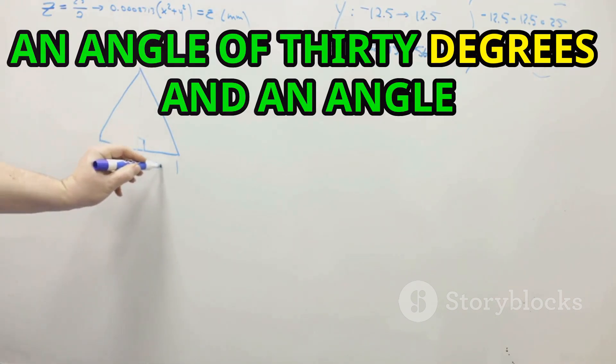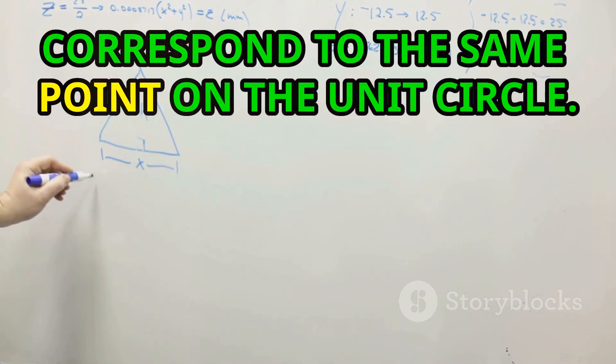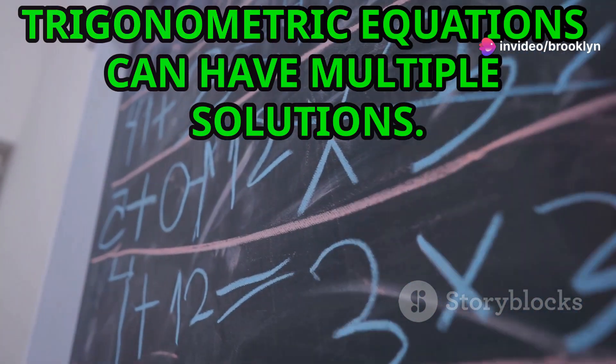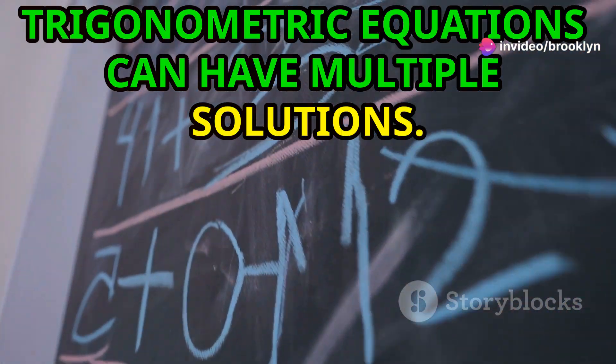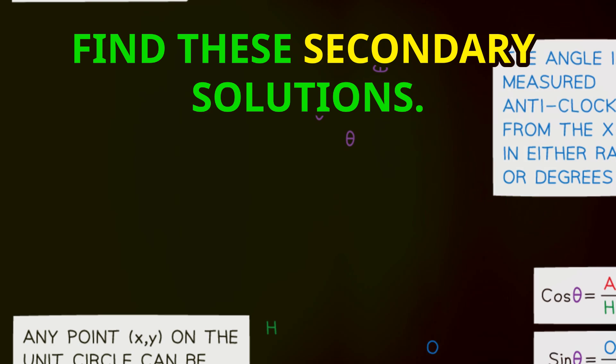For example, an angle of 30 degrees and an angle of 390 degrees both correspond to the same point on the unit circle. This property of periodicity means that trigonometric equations can have multiple solutions. The unit circle helps us visualize and find these secondary solutions.